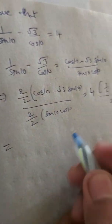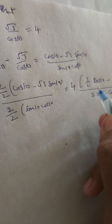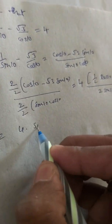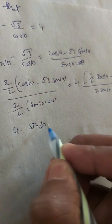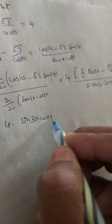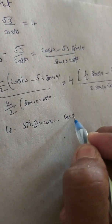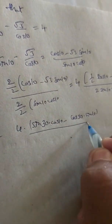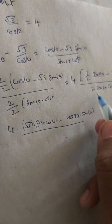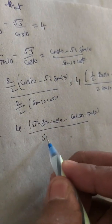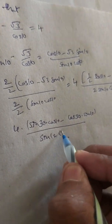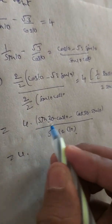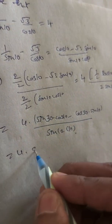This equals 4 times [sin(30°)·cos(10°) minus cos(30°)·sin(10°)] divided by 2·sin(10°)·cos(10°), where sin(2×10°) equals 2·sin(10°)·cos(10°).